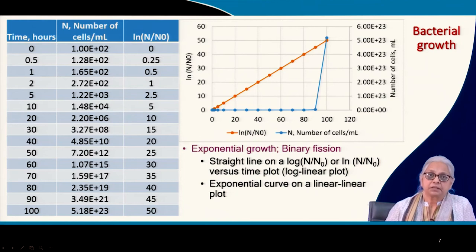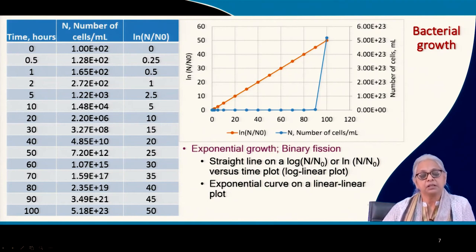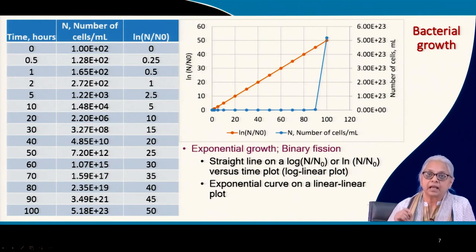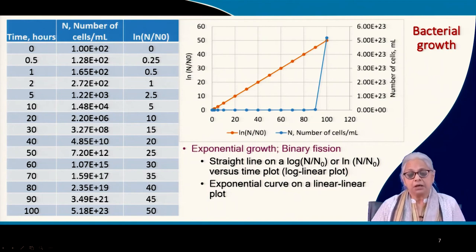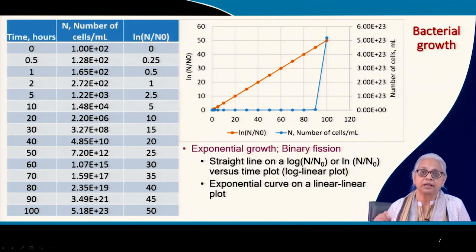We do not usually start an experiment with a single bacterial cell; we generally start with an inoculum of maybe a thousand or a million cells. In another hypothetical example with time in hours, the initial concentration is 100 cells per ml. You can express this as log(N/N0), where N0 is the number of cells at t=0. This is also called the normalized cell concentration.